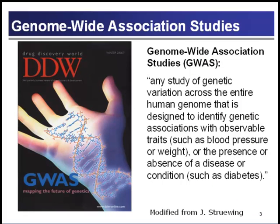Genome-wide association studies, or GWAS, have become a really common tool for dissecting the genetics of complex diseases. A GWAS is typically defined as any study of genetic variation across the entire human genome that is designed to identify genetic associations with observable traits such as blood pressure or weight, or the presence or absence of a disease or condition such as diabetes.